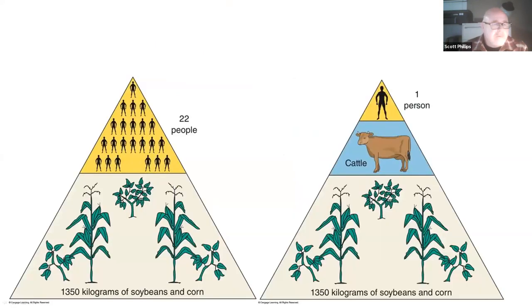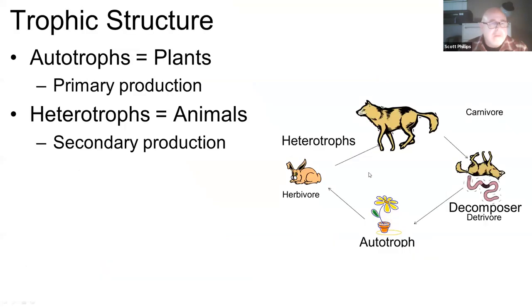Here's another illustration: if you use corn and soybeans directly as food, you could feed 22 people. But if you use that same material to feed one cow, that cow would only provide enough to feed one person, because you're losing biomass between trophic levels. To recap: autotrophs are plants and do primary production; heterotrophs are generally animals and do secondary production.